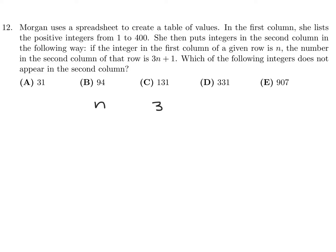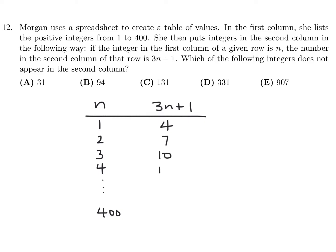Let's make these columns and see what happens. The first column goes 1, 2, 3, 4 all the way down to 400. Then 3n plus 1 gives: 4, 7, 10, 13, all the way down to 1201.